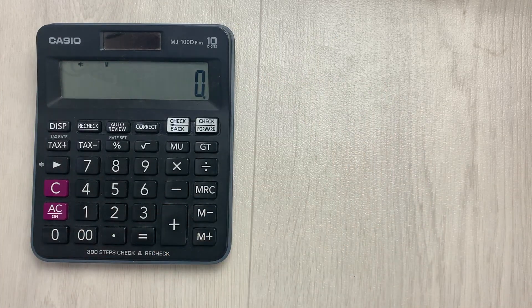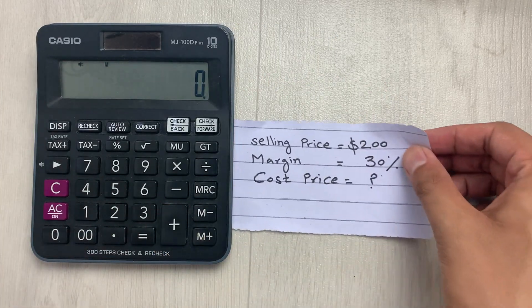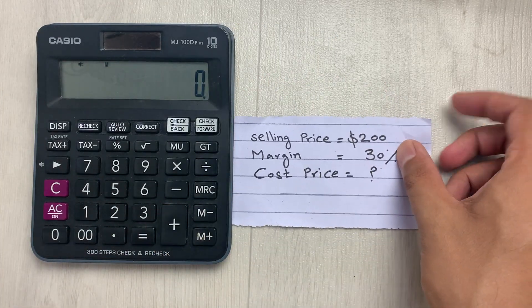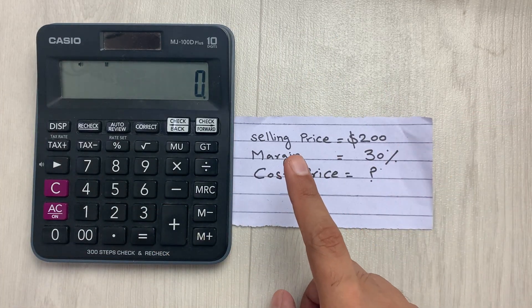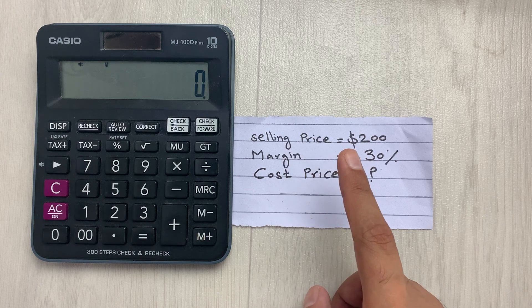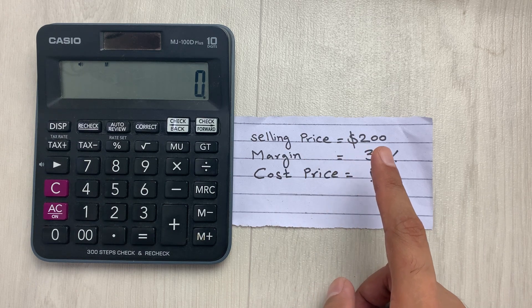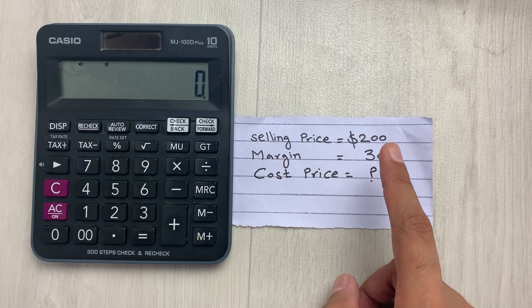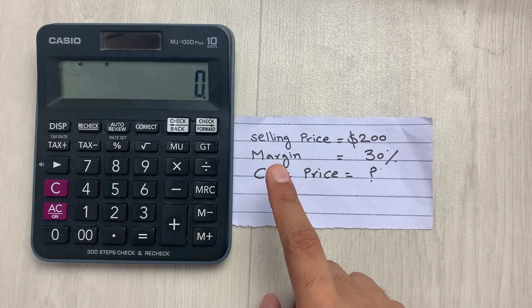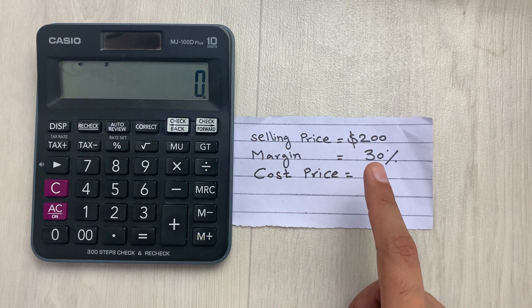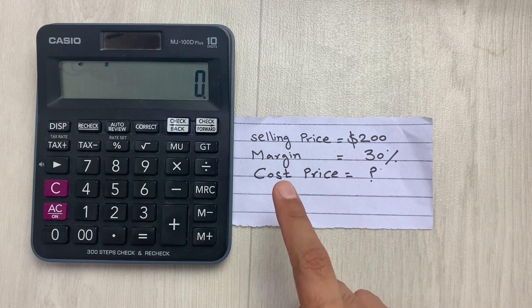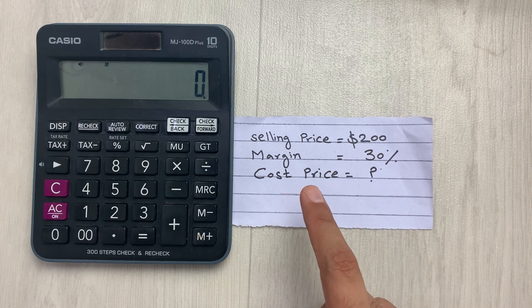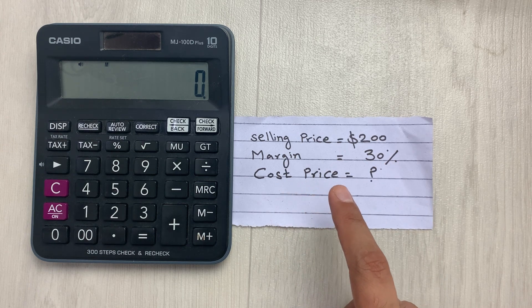I will show you with an example. Let's say we have an item and the selling price of that item is $200 and the margin is 30%. So, how you can find out the cost price?